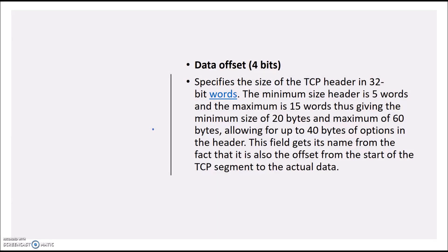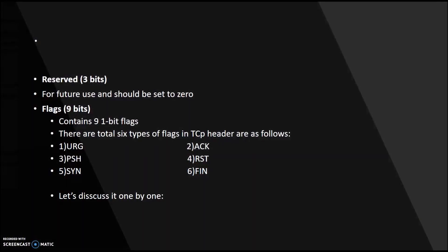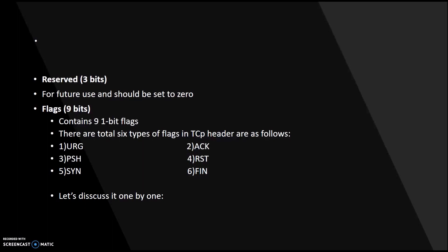After acknowledgement number, there is data offset. This field gets its name from the fact that it specifies the offset from the start of the TCP segment to the actual data. The TCP data offset is a four-byte field and specifies the size of the TCP header in 32-bit words. Essentially, data offset contains the size of the TCP header as a multiple of four bits, and at the end it represents the exact data starting point.